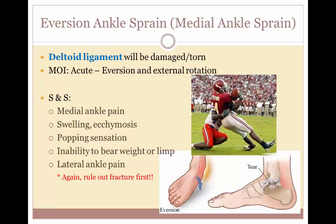The athlete will usually know they have sprained their ankle. There will be immediate pain on the inside of the ankle after twisting it, rapid swelling, and bruising may develop. They will complain of difficulty walking or weight bearing and have limited range of motion. In moderate to severe eversion ankle sprains, it is always recommended that an x-ray is requested to rule out fracture.